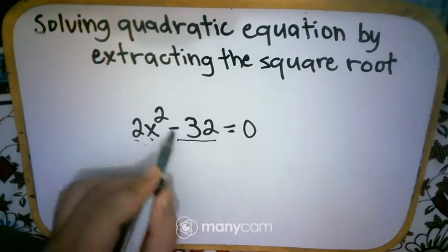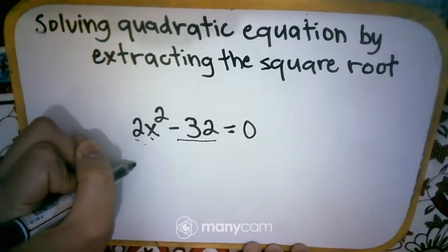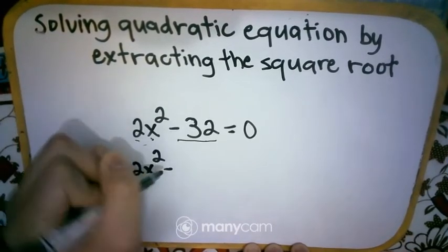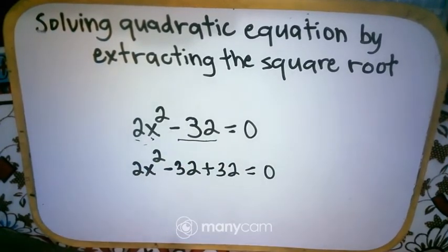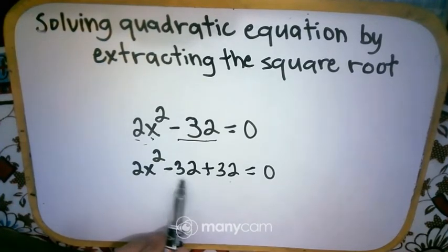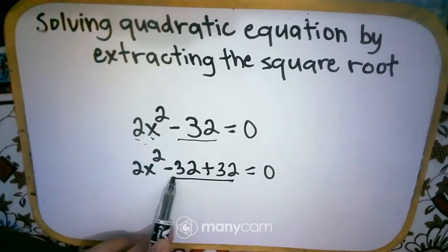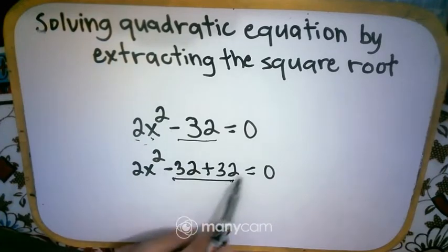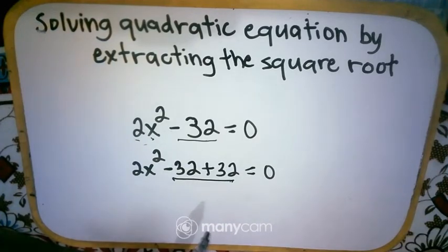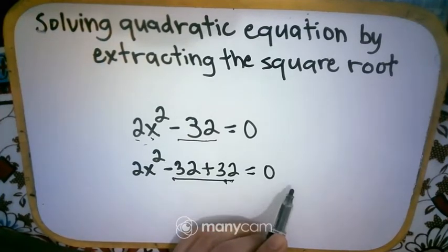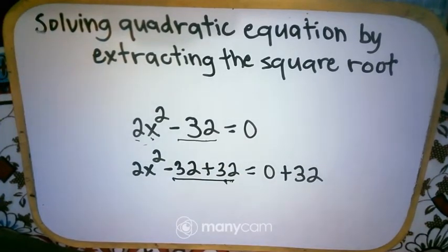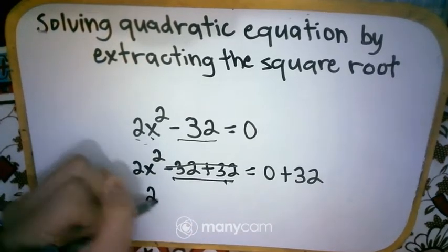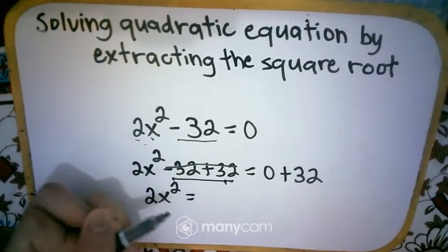We add 32 to both sides: 2x² minus 32 plus 32 is equal to 0 plus 32. We added 32 because negative 32 plus 32 equals 0, removing it from the equation. Do it to the left, do it to the right — we add 32 on the right side as well. Since 0 plus 32 is 32, we now have 2x² is equal to 32.